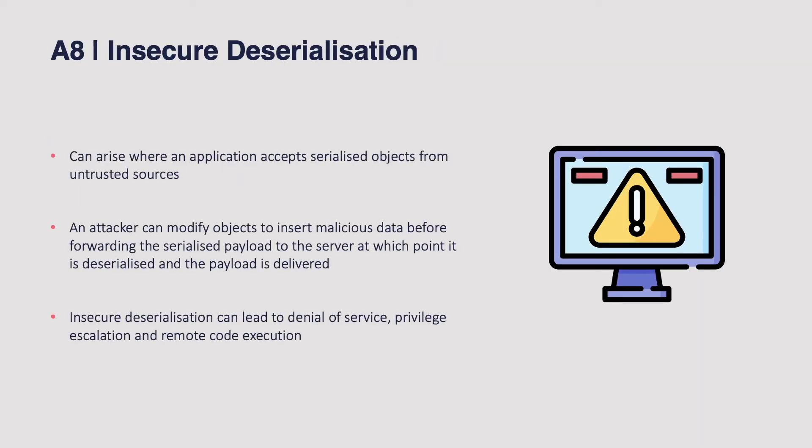We now reach insecure deserialization. Serialized objects are created where you want to save the current state of an object in your application — say you want to store it on disk for later or send it to an API elsewhere. That object is serialized into a binary representation that can be later unpacked to retrieve the object in its saved state. The insecurity comes from where the serialized object is deserialized, because if an attacker is able to serialize an object and the web application accepts untrusted serialized objects, they can potentially inject malicious data to get the application to behave in unintended ways. This can lead to denial of service, privilege escalation, and more critically, remote code execution.